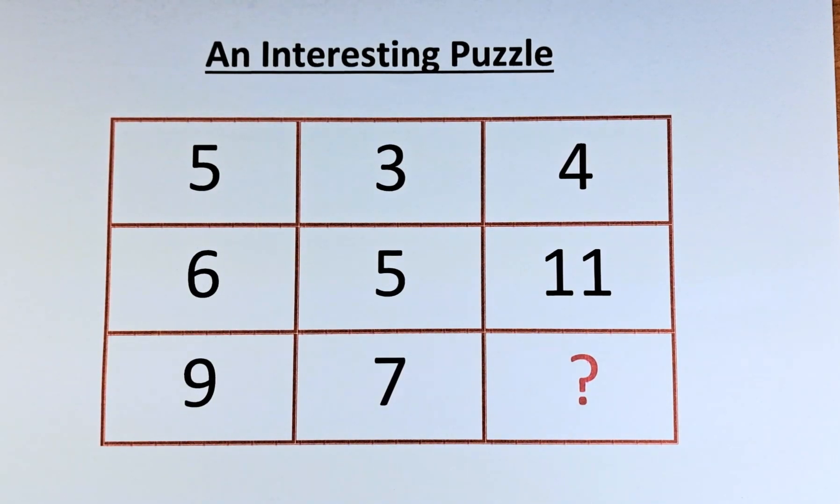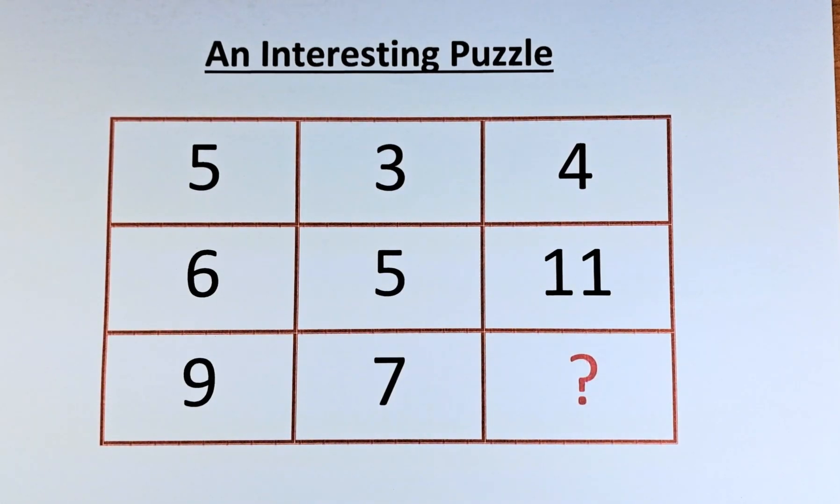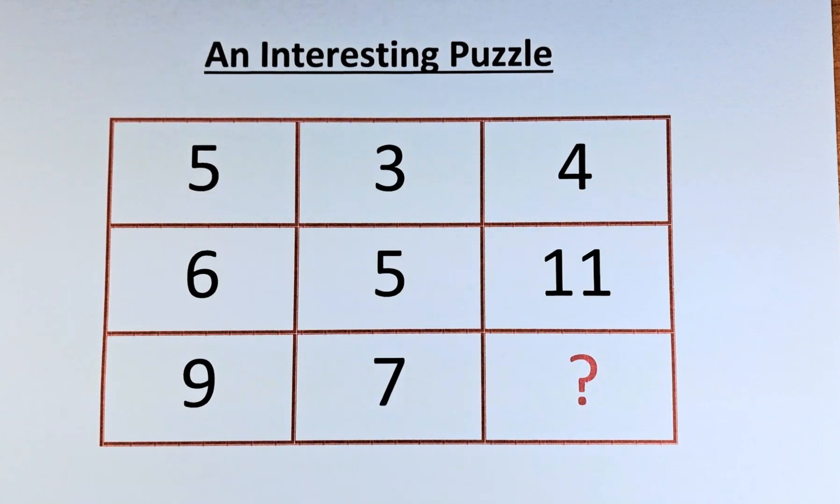Second row, we have 6, 5, 11. And in the final row, we have 9, 7 and the question mark. As usual, we need to find what number represents the question mark.